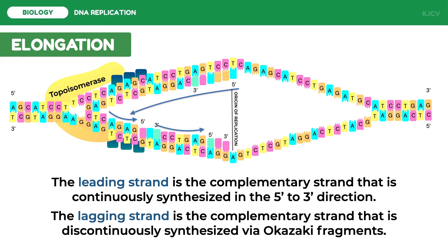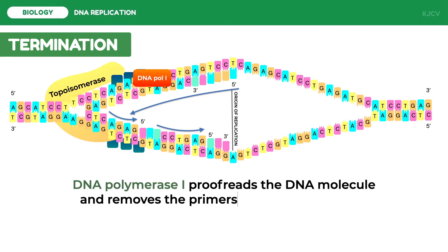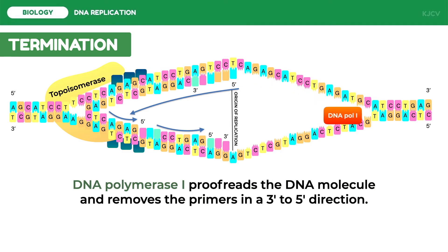When the two original strands are connected to their own complementary strands, the replication of the DNA ends — two new identical DNA molecules have been completed. This signals the termination of replication. During termination, an enzyme called DNA polymerase I proofreads the DNA molecule to avoid mismatch errors and removes the primers.